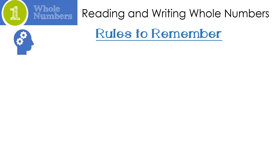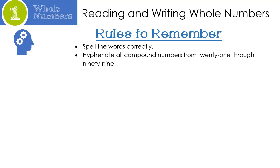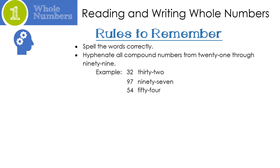Let's look at some rules we need to remember when we read and write whole numbers. The first thing is we need to spell the numbers correctly — it's really important. Next, we need to realize that we have to hyphenate all compound numbers from 21 through 99. So here's our first example: 32, written as thirty-two. How about 97? Ninety-seven. And our last example is 54: fifty-four.